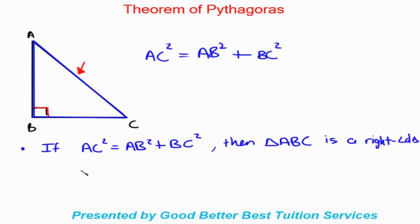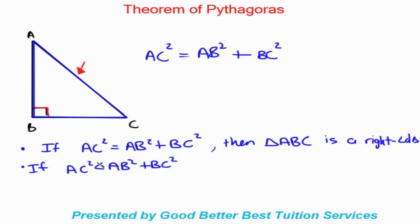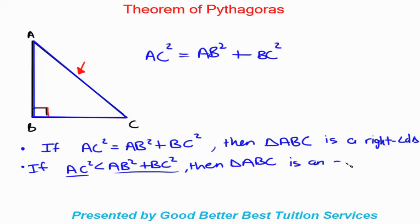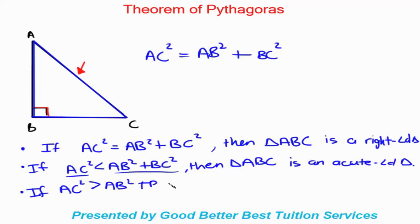If AC squared is less than AB squared plus BC squared — meaning the sum of the squares of the two other lines is more than AC squared — then triangle ABC is an acute angled triangle.